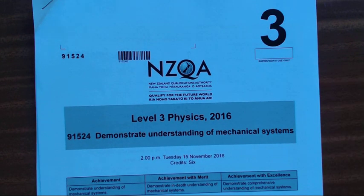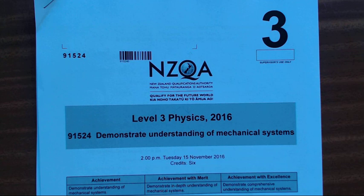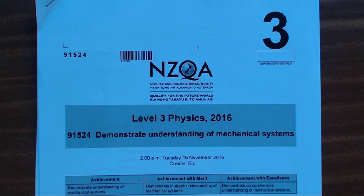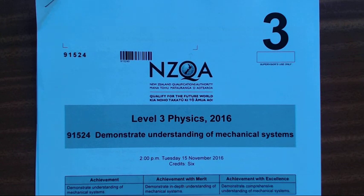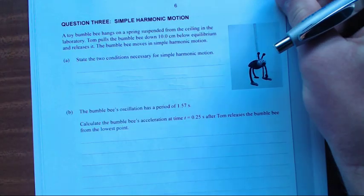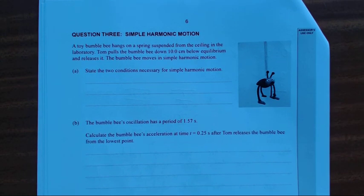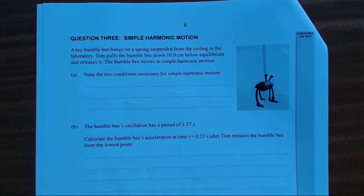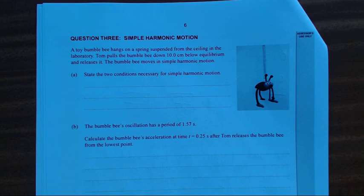Okay, in this video I'll be working through question 3 of the level 3 2016 mechanics exam. Question 3: Simple Harmonic Motion. A toy bumblebee hangs on a spring suspended from the ceiling in the laboratory. Tom pulls the bumblebee down 10 centimeters below equilibrium and releases it. The bumblebee moves in simple harmonic motion.